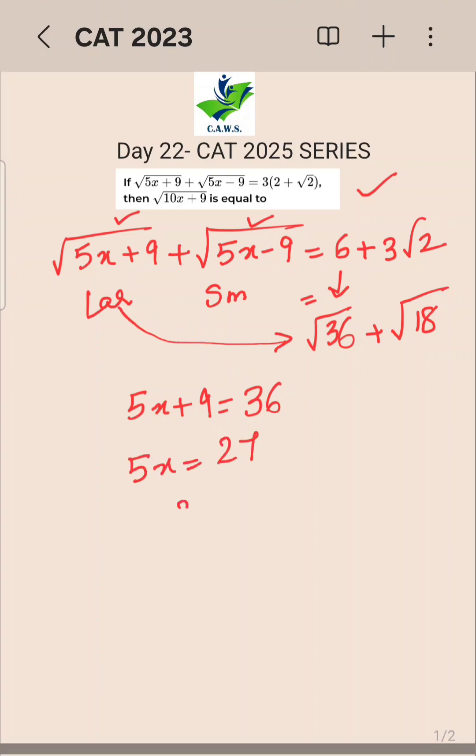Alternatively, equate the smaller part to the smaller part: 5x-9 = 18. Again, 5x = 27, so x = 27/5. Now the question asks: what is the value of √(10x+9)?